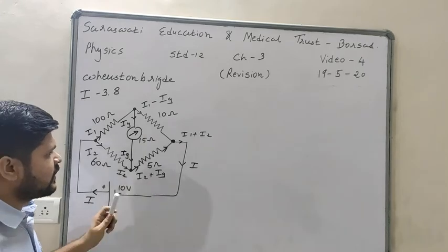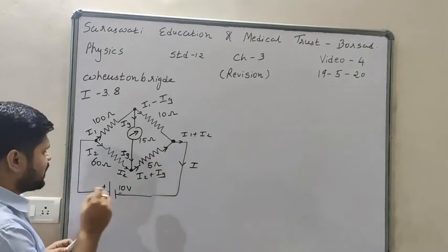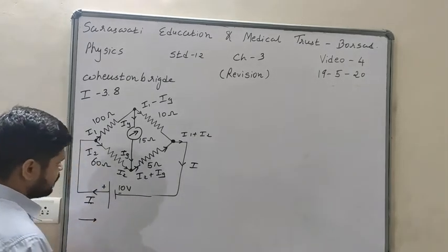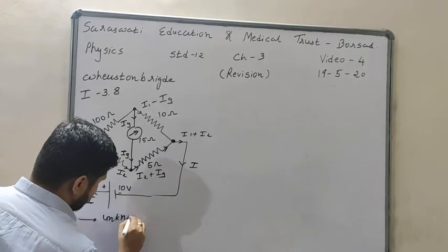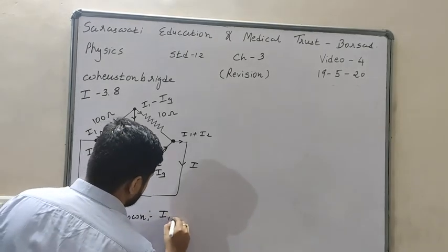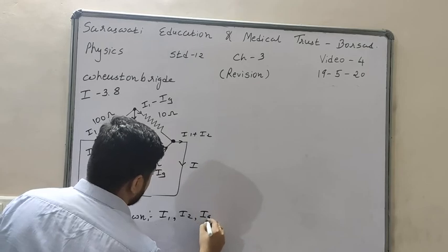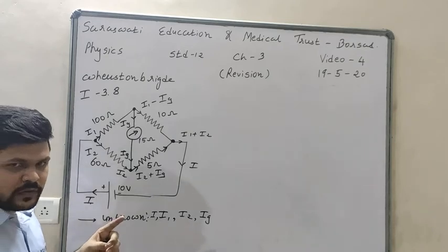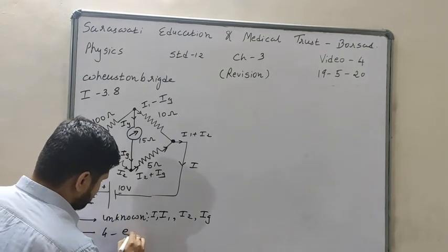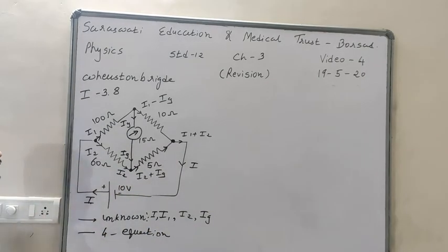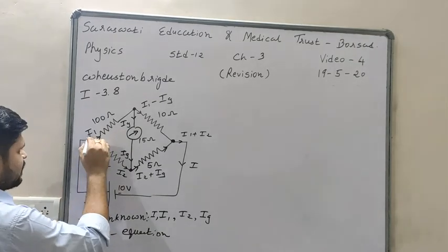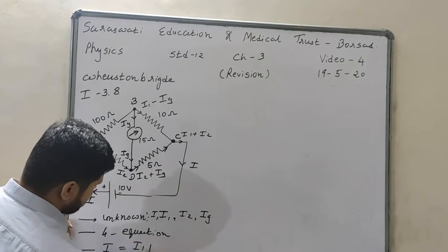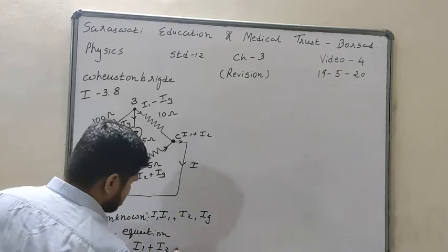We will solve this example to find current in each branch — I, I1, I2, and IG. There are four unknowns, so we need four equations. We already have one equation from Kirchhoff's first rule at junction A: I = I1 + I2. We need three more equations, which we will derive using Kirchhoff's second rule applied to three loops.